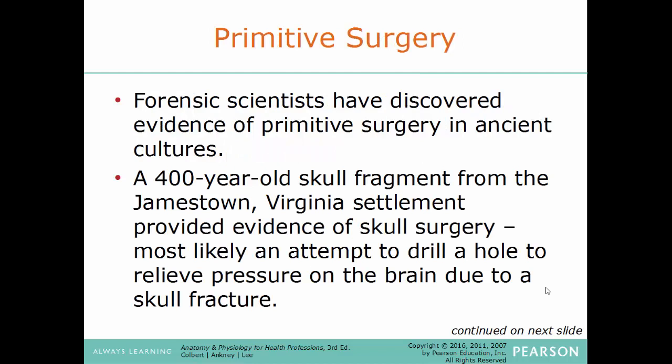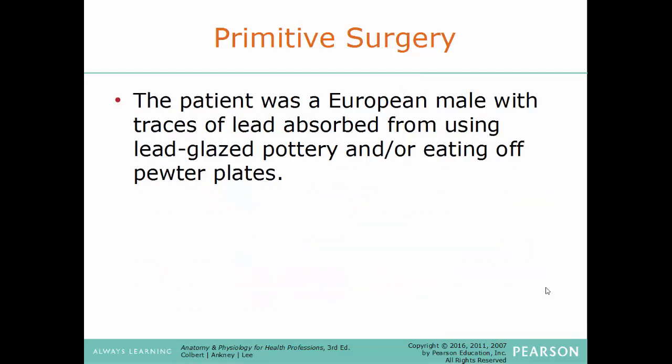Forensic science has helped us learn about the health of ancient people, such as the fact that ancient Egyptians were stricken with TB. We think of TB as a lung disease, but it can affect any area of the body with high oxygen content, like the brain, kidneys, or ends of long bones — discovered by examining skeletal remains of ancient Egyptians. Forensic scientists have also discovered evidence of primitive surgery. A 400-year-old skull fragment from the Jamestown, Virginia settlement showed evidence of skull surgery, likely an attempt to drill a hole to relieve pressure on the brain due to a skull fracture. The patient was a European male with traces of lead absorbed from lead-glazed pottery or pewter plates.